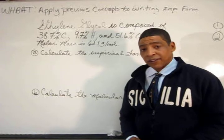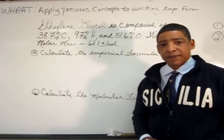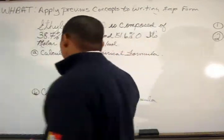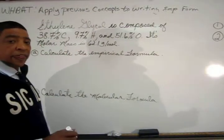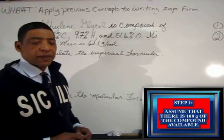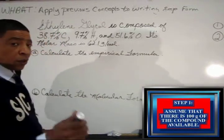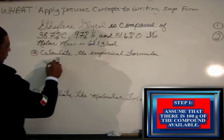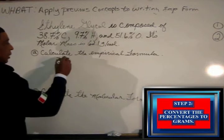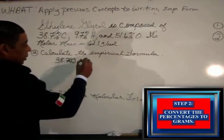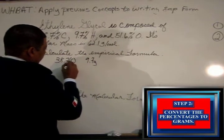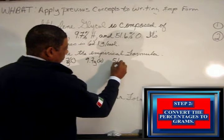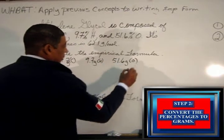The first step in this process is to determine the empirical formula. To do so, simply follow these steps. The first step is to assume that there are 100 total grams of the compound on hand. If there are 100 total grams, then 38.7 grams is carbon, 9.7 grams is hydrogen, and 51.6 grams is oxygen.